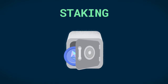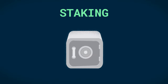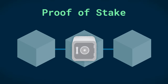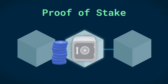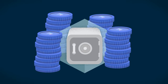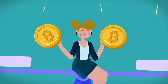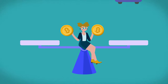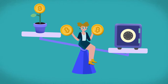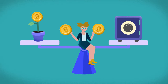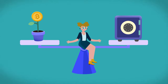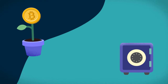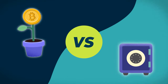Staking, on the other hand, involves locking up a crypto asset to participate in a proof-of-stake blockchain security system in exchange for rewards. From an investor's point of view, it might seem that both staking and yield farming serve the same purpose — that is, to commit crypto assets and receive rewards. However, the two are distinct in some ways.